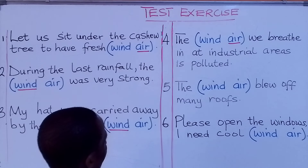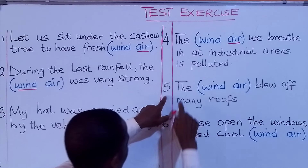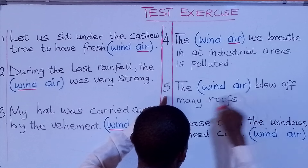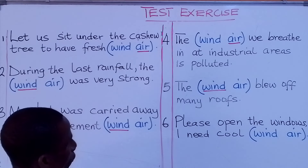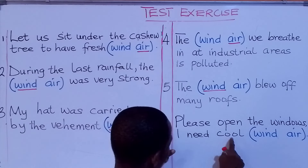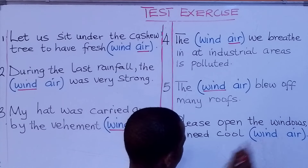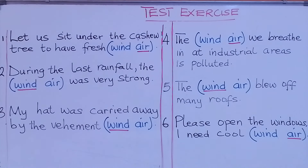Number three: 'My [heart / car] was carried away by the vehement [wind / air].' What are we going to put there? — By the vehement wind. Number four: 'The [wind / air] we breathe in at industrial areas is polluted.' — The air. Number five: 'The [wind / air] blew off many roofs.' — The wind blew off many roofs.